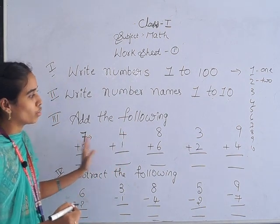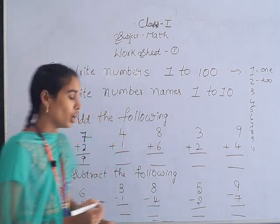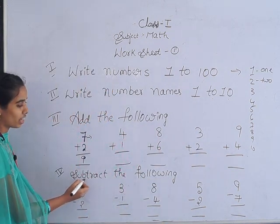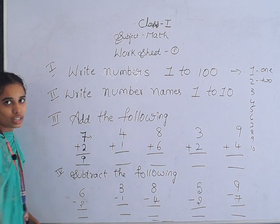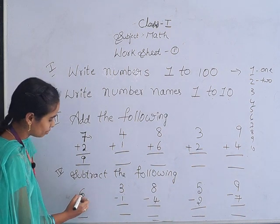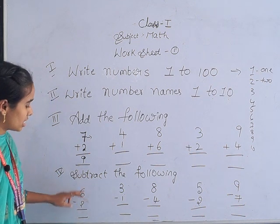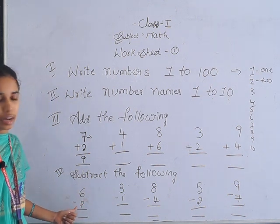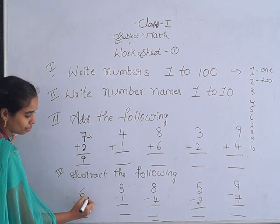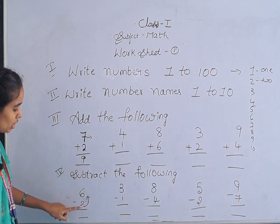Next, subtract the following. The first one is six minus two. Two numbers are given: six and two. You have to subtract. Here, which one is the small one?